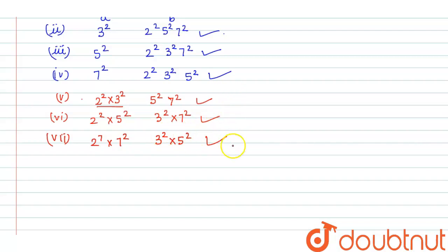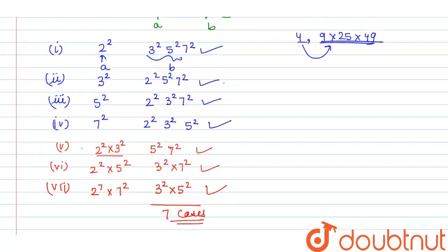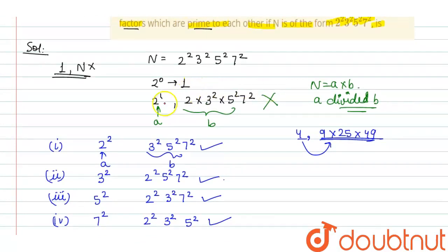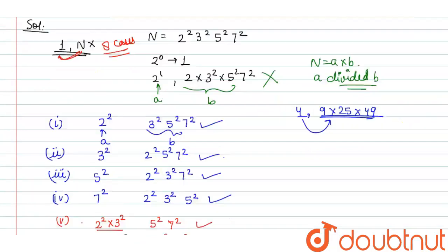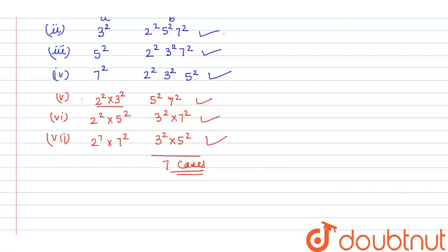So we can say there are a total of 7 cases. If we also count the case of 1 × n, it would be 8 cases, but that case is not valid. Therefore, 7 cases is the correct answer to this question.